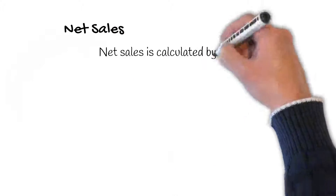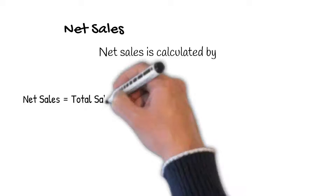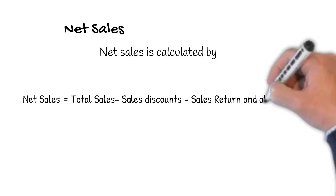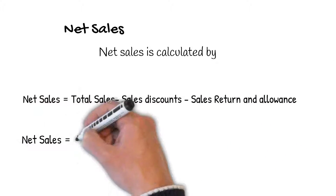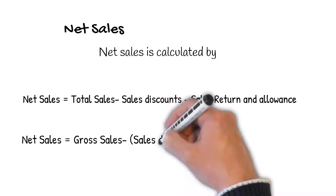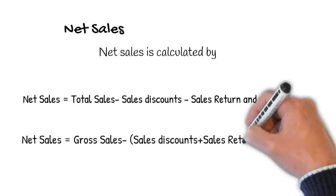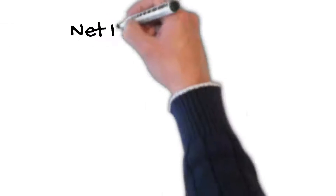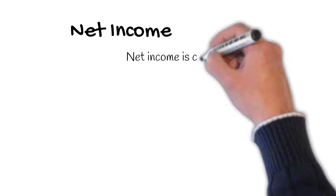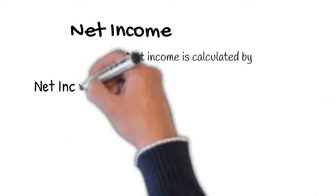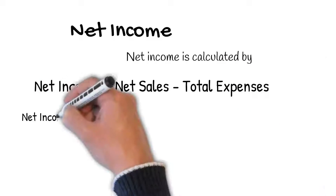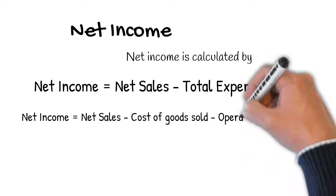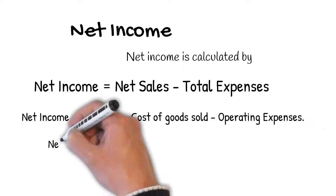Net sales is calculated by total sales subtract sale discount and sales return and allowance. Net income is calculated by net sales less total expenses of the business.